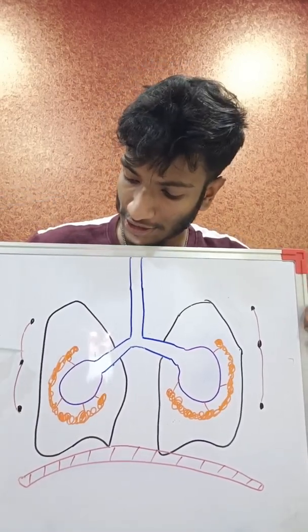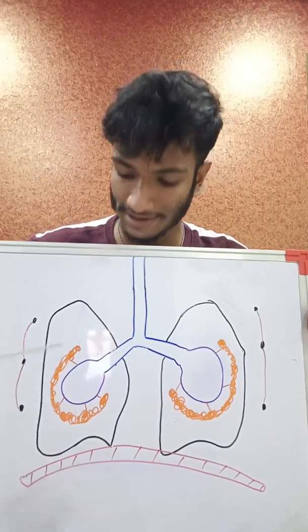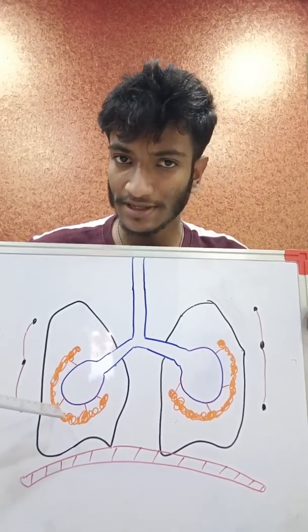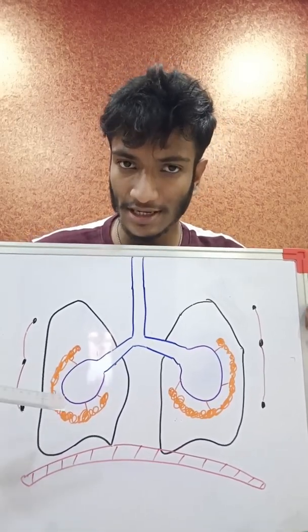During normal inspiration, the intercostal muscles and the diaphragm contract. Here, the orange one represents the elastic tissue which is present in the lung parenchyma.